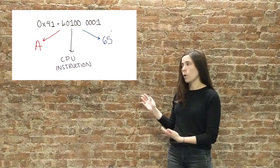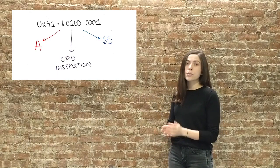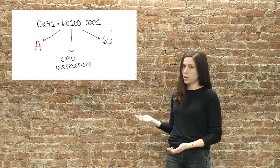the number 65, or an instruction for the central processing unit. We actually need the central processing unit in order to interpret the values that we've stored in memory.